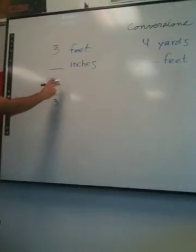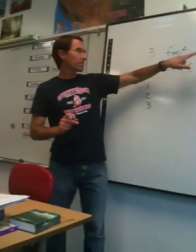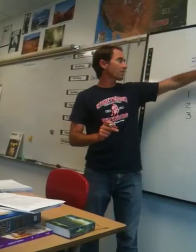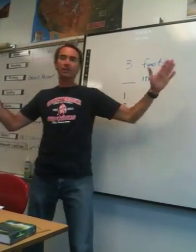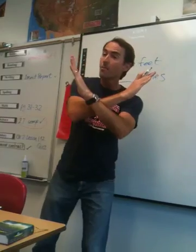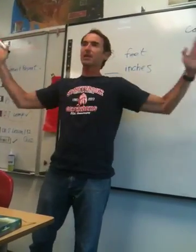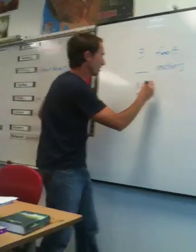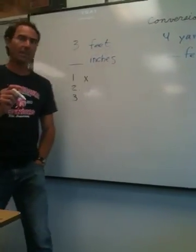In the first number, we're going to ask ourself, are we going from something big to something little, or from something little to big? In this case, we're going from something big to something little. So we're going to do what? Multiply. Let's do it again. Big, little, multiply. It's kind of like your hands are going like this. So in this first one, I'd like you to put a multiplication sign.